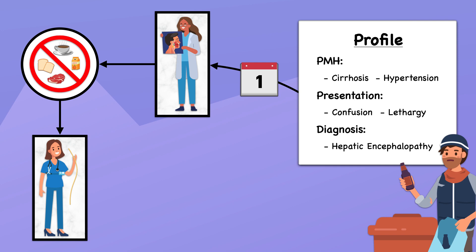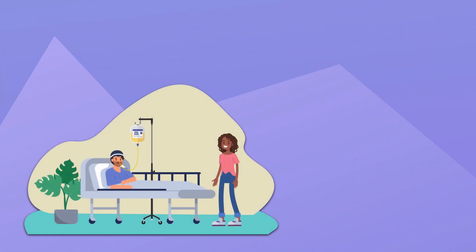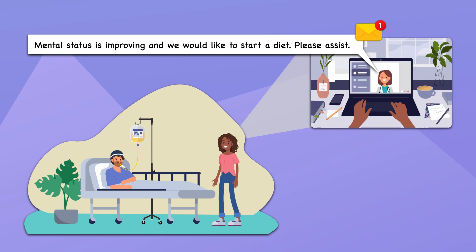A nasogastric tube was inserted by the physician's assistant later that evening, and Frank was started on a continuous tube feeding infusion the following morning. You're the dietician who has been managing the tube feeding, and you receive a new consult from the attending physician on hospital day five that states: mental status is improving and we would like to start a diet. Please assist.